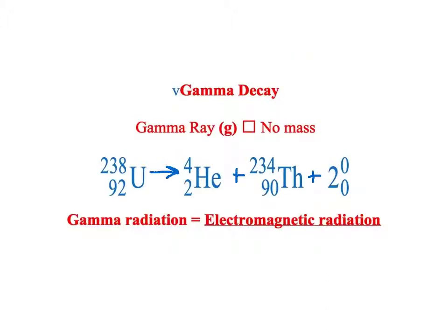There's also gamma decay. We're not going to concern ourselves with the equations for gamma decay because it usually accompanies some other type of decay like alpha or beta.